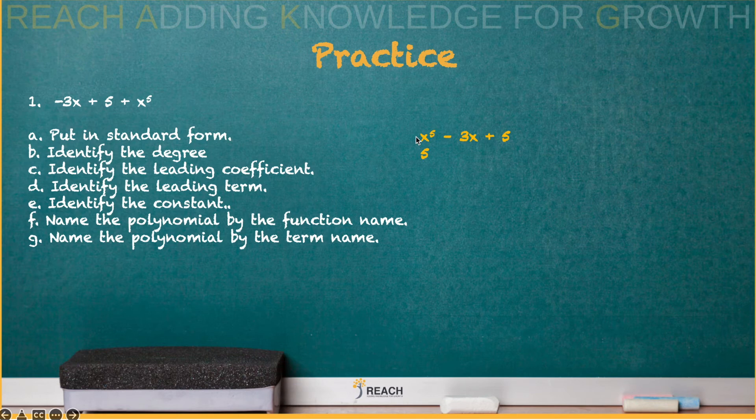If I say I got PlayStation 5, how many PlayStation 5s? It's one of them. If I didn't say a number, X to the fifth means one of them. And that whole term, remember, it's the variable, and the exponent can't go away, it's X to the fifth. The constant, what's the number? Just the number. Five.